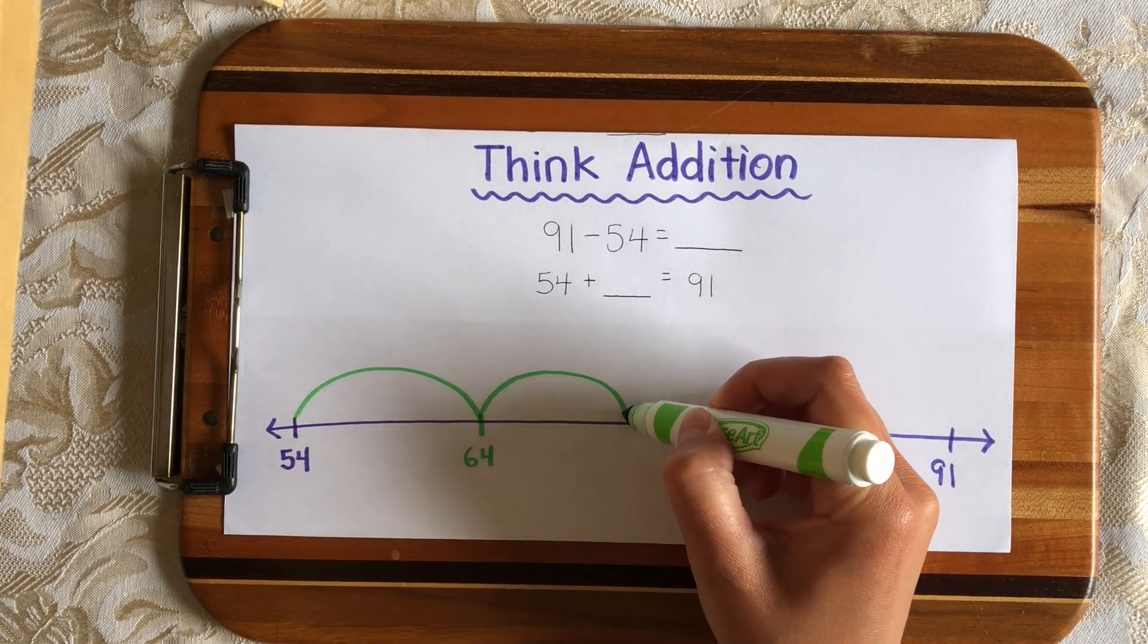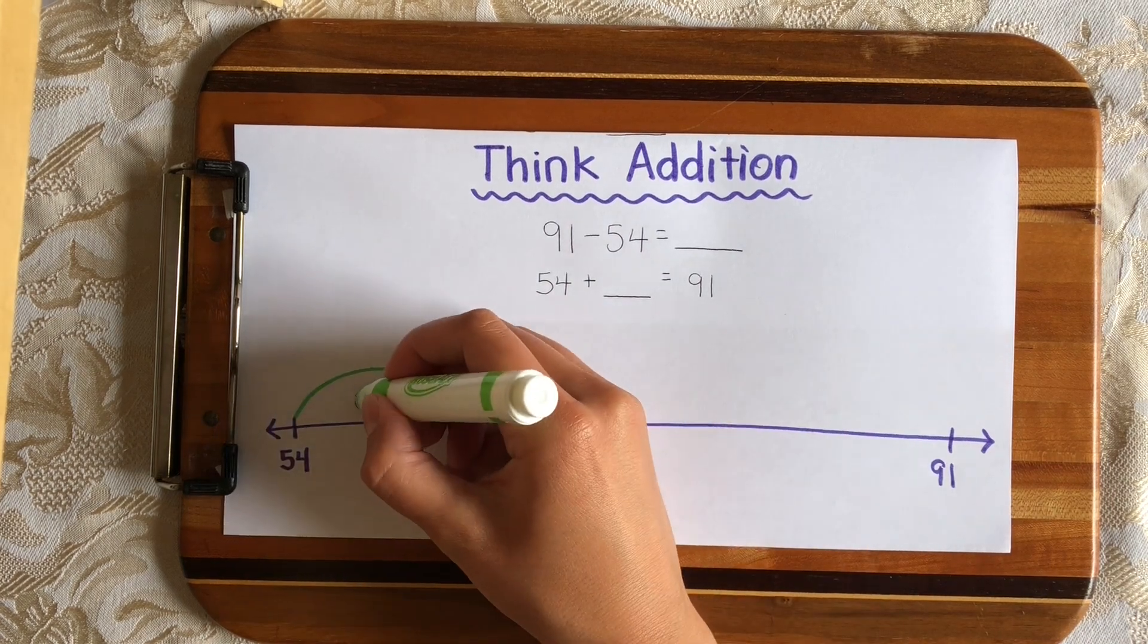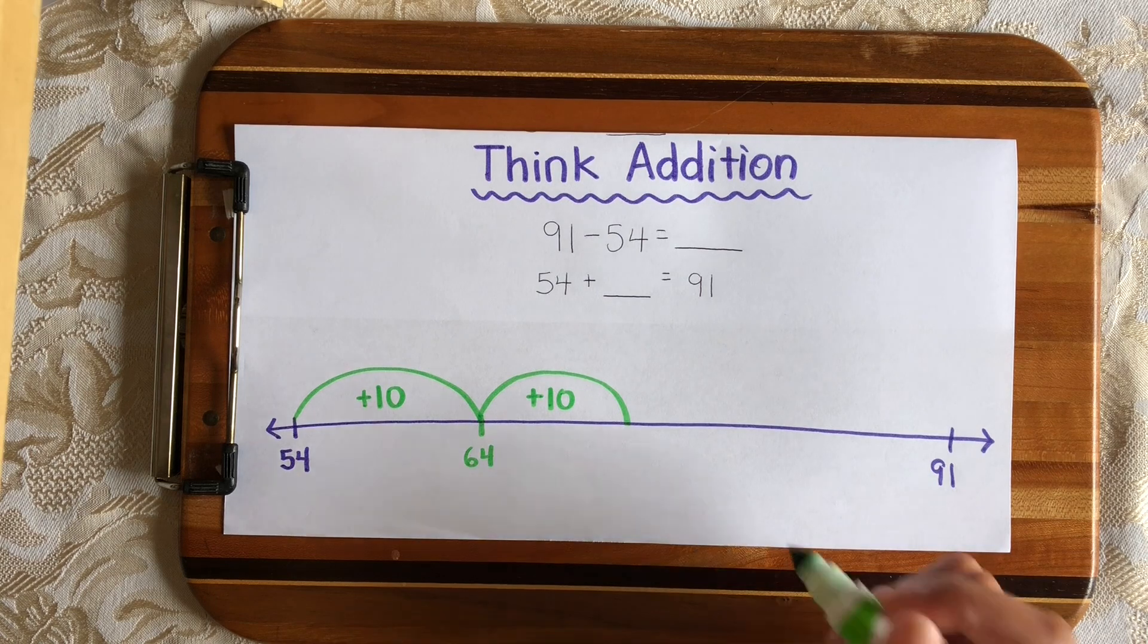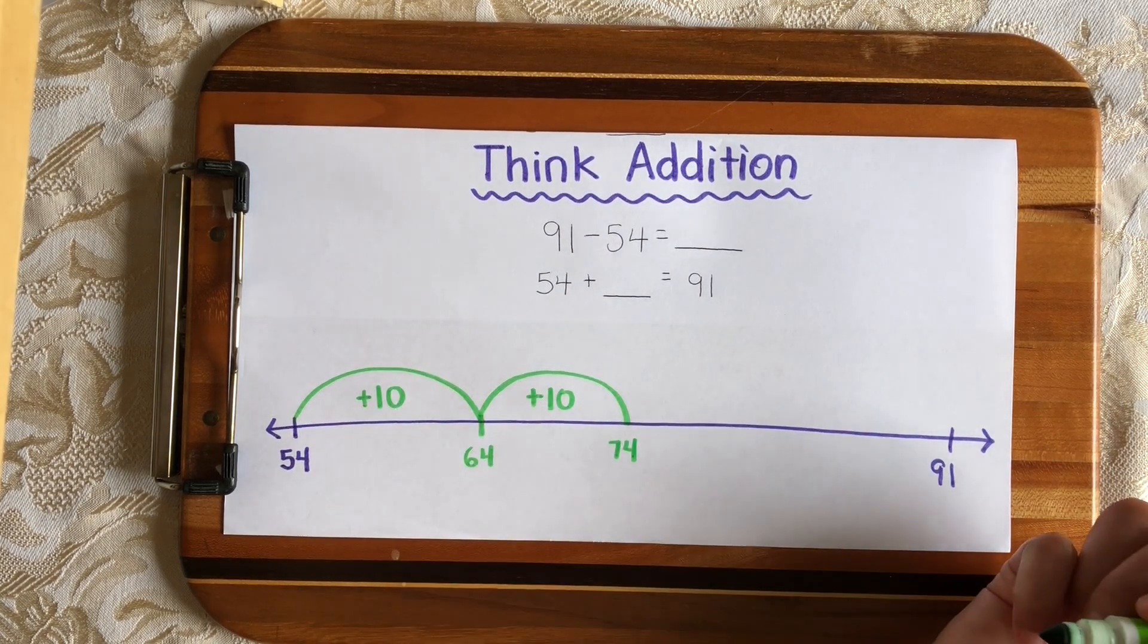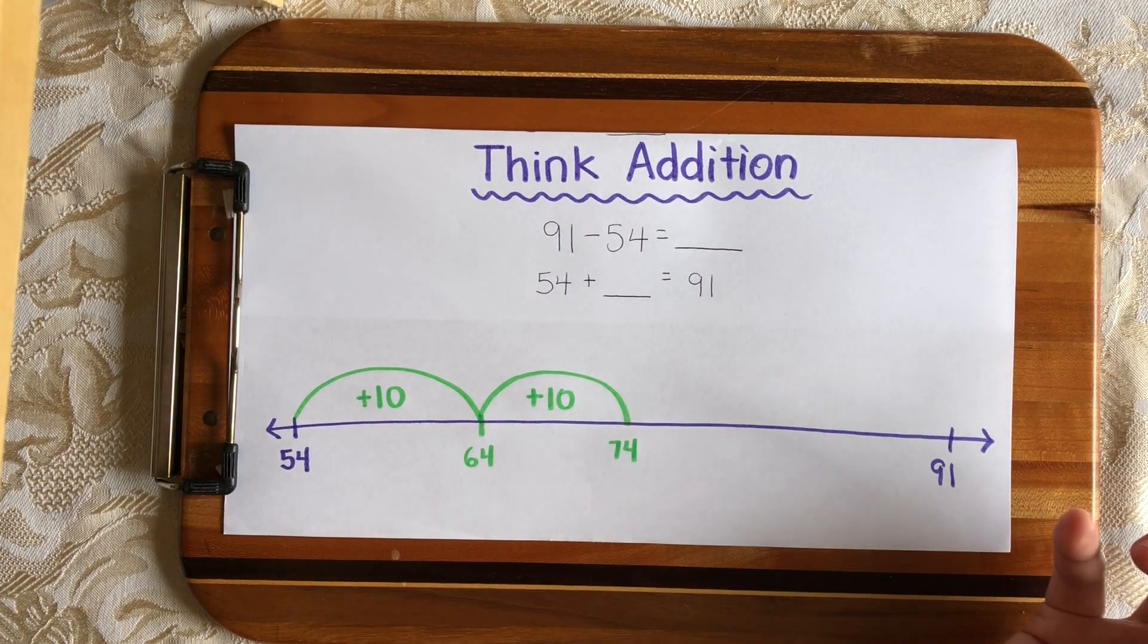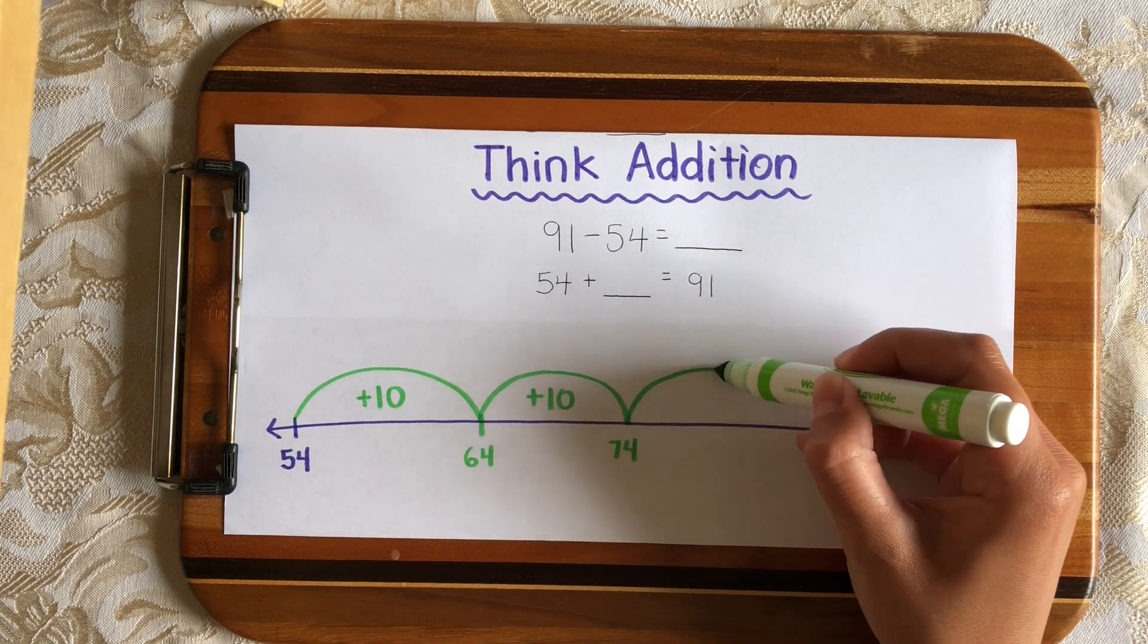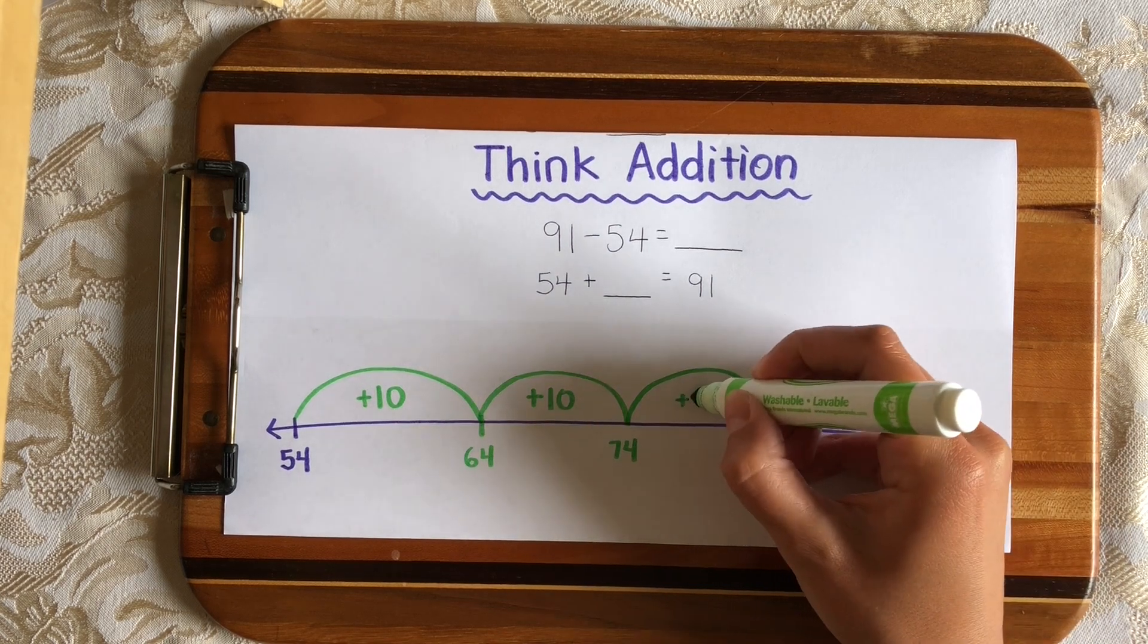If I make another hop of 10 I will get to 74 and I can do that. I don't want to go past 91. I want to get exactly to 91. So I just made a hop of 10 there. I need to label these just to remember how big they are. 10 plus 64 will get us to 74. So now I'm thinking if I make another hop of 10 will it be past 91 or not? 10 plus 74 is 84 so I can make another hop of 10. And that will get us to 84.